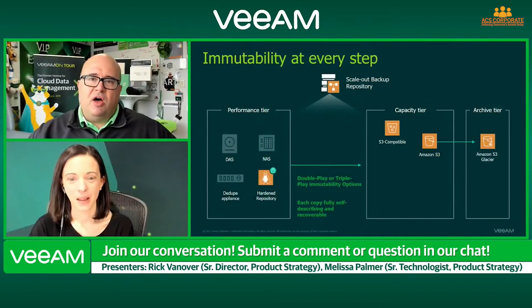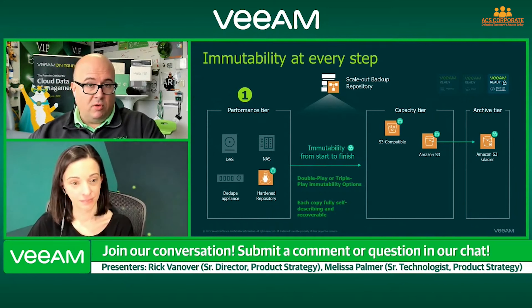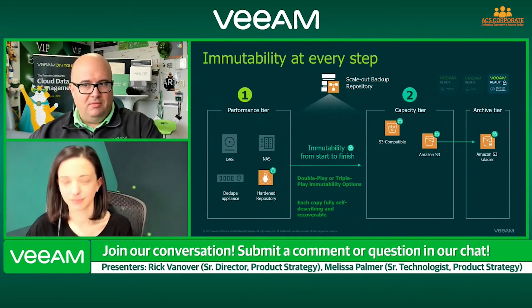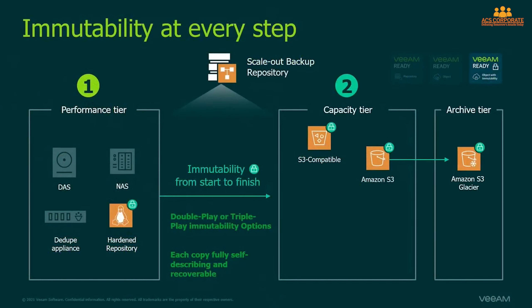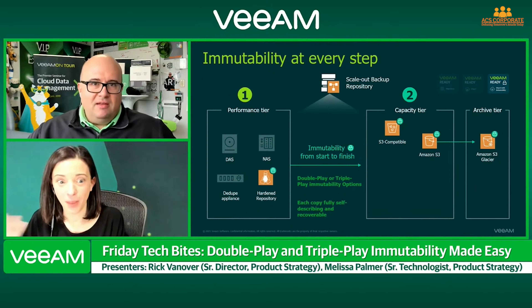By having immutability options end to end, you can have one copy on the performance tier and a second copy on the capacity tier — that's the double play. So both copies are immutable. What is missing from this picture? Your Veeam infrastructure, your source data — I'm actually preparing for everything to have failed. It doesn't matter, because you can just connect to one of these repositories with a brand new server and you're back in business.